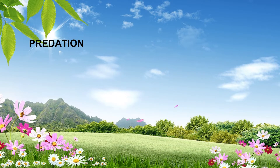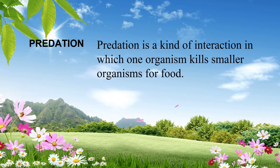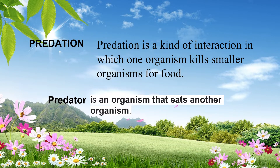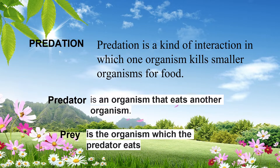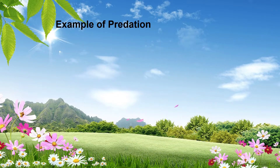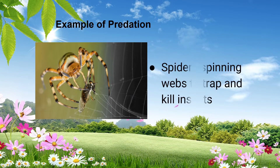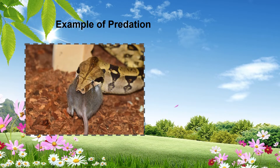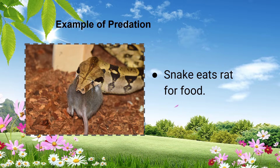Another interaction in the rainforest is called predation. Predation is a kind of interaction in which one organism kills smaller organisms for food. In predation, there is a predator — an organism that eats another organism — and the prey, which is the organism the predator eats. For example, spiders spin webs to trap and kill insects. Another example: a snake eats a rat for food.